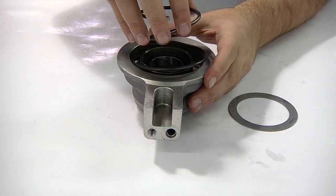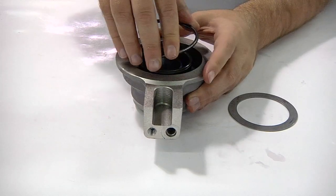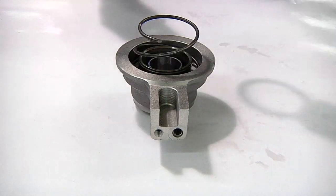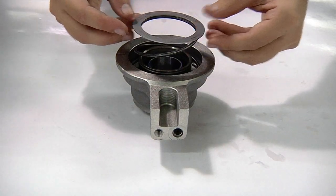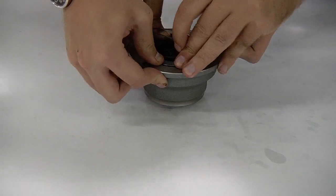Install the spring with the large diameter down. Place the retaining washer onto the spring.